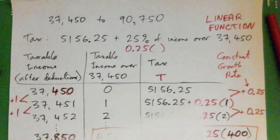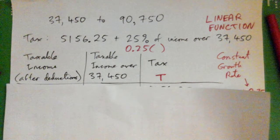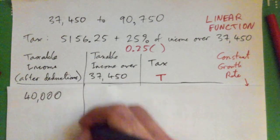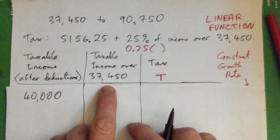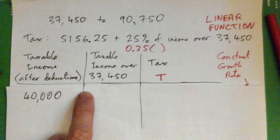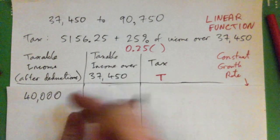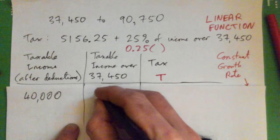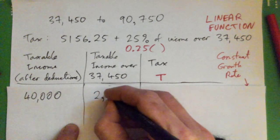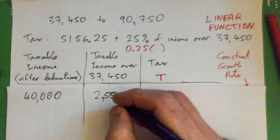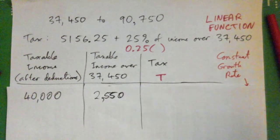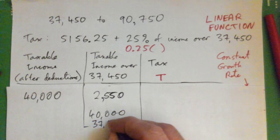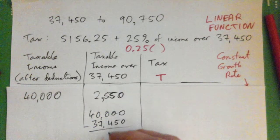In the next one, if the taxable income was $40,000, we first figure out what's the amount over $37,450. Let's get a calculator out for that and subtract. This subtract this is going to give $2,550.